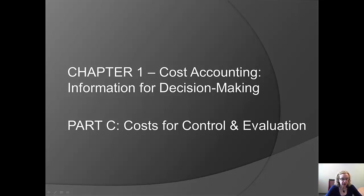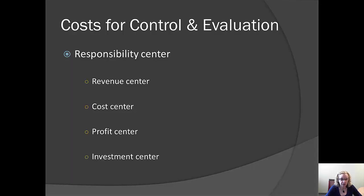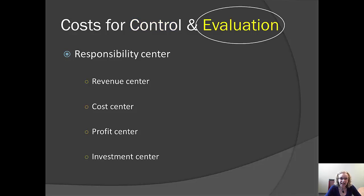The last section of this chapter had to do with the kinds of information that managers need in order to make decisions. This section has to do with how we can tell whether managers are making good decisions. In order to do that, we need to think about control and evaluation. Control has to do with our understanding of the things over which a manager has jurisdiction, because we know it's wrong to evaluate people on things over which they have no control. Evaluation has to do with the extent that the manager uses the things they can control in the firm's best interest.